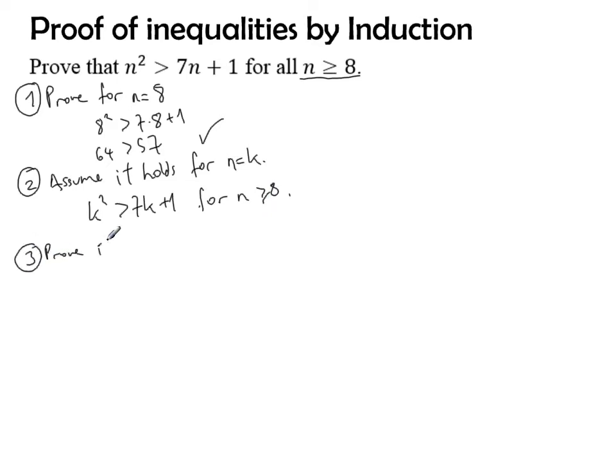Now I have to prove it for n equals k plus 1. The way it's going to look, this is my aim: to show that (k+1)² must be bigger than 7 times (k+1) plus 1.